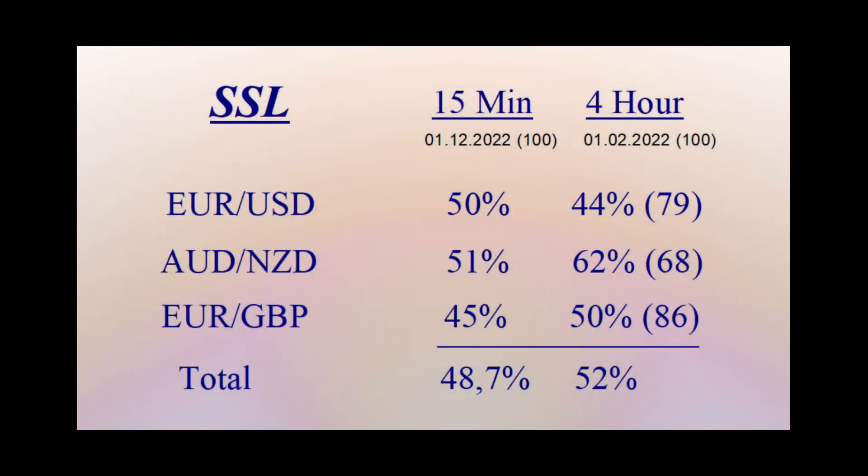After hours and hundreds of backtests, these are our final results. The SSL performs at the EURUSD a little bit better at the 15-minute chart, but the AUDNZD and the EURGBP are clearly better at the 4-hour chart. So in total the SSL performs better at the 4-hour chart and at higher time frames as well — with a 52% win rate at the 4-hour chart and a 48.7% win rate at the 15-minute chart. It's not bad for a confirmation indicator without any other indicators.